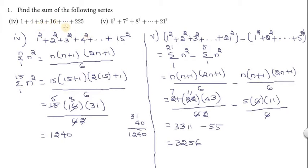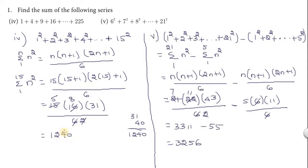For the square formula problem: 1 squared plus 2 squared plus 3 squared plus 4 squared, up to 225 which is 15 squared. The square formula is: summation of n squared equals n into n plus 1 into 2n plus 1 divided by 6. Substitute n equals 15: 15 into 16 into 31 divided by 6. Cancel 6: 5 into 8 into 31 equals 40 into 31 equals 1240. The answer is 1240.